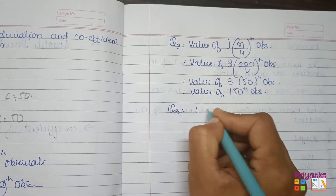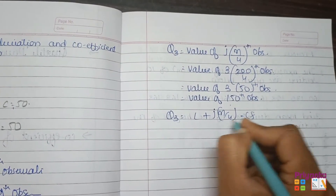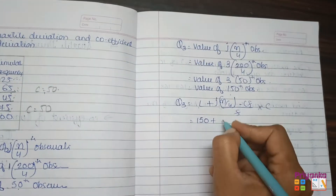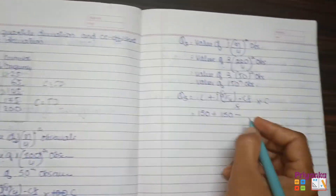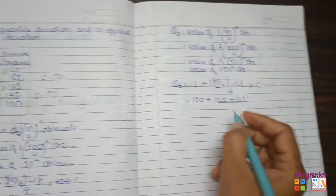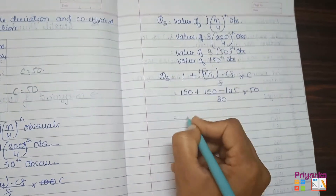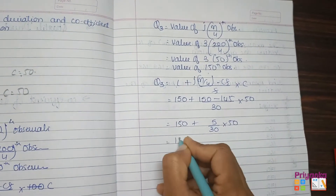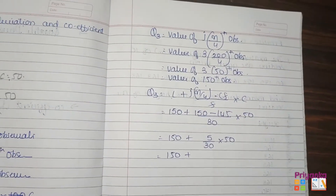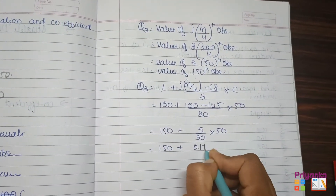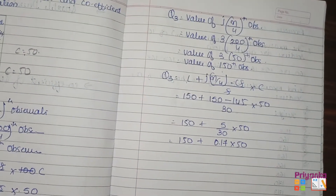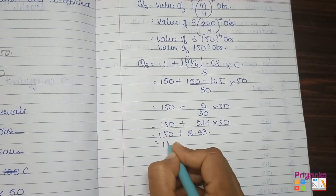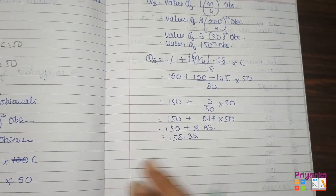Apply the formula: Q3 = L + [(3N/4 − CF) / f] × C = 150 + [(150 − 145) / 30] × 50. That is 150 + [5/30] × 50 = 150 + 0.1667 × 50 = 150 + 8.33 = 158.33. So Q3 = 158.33.